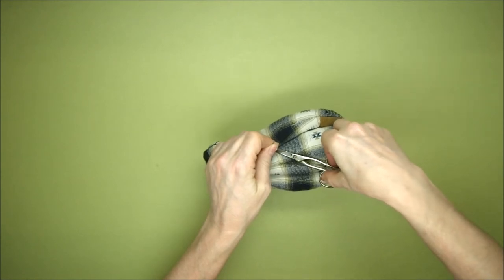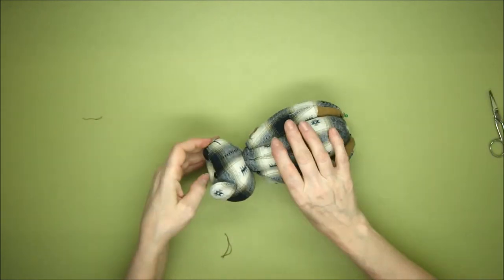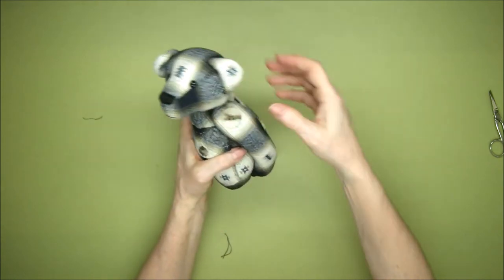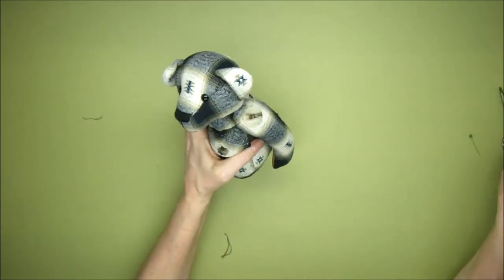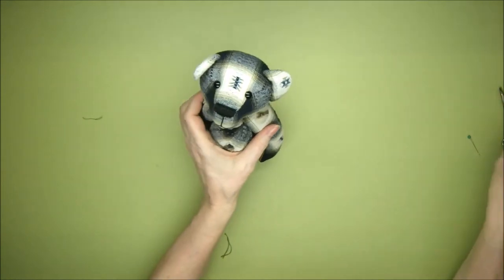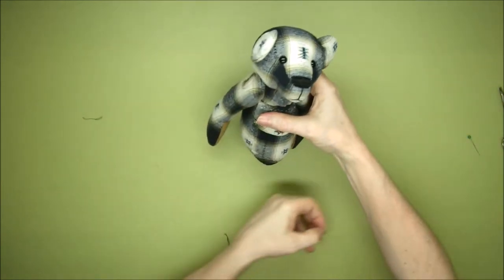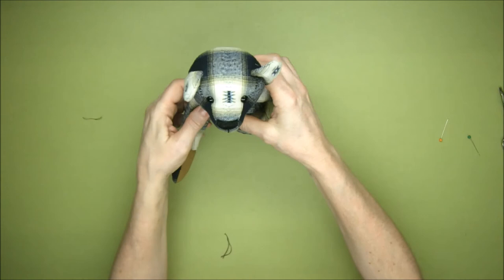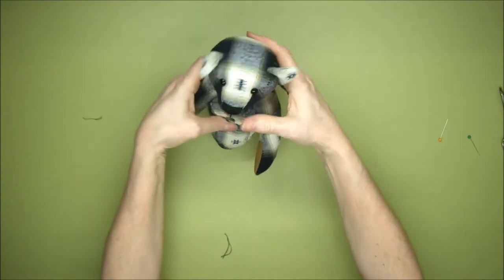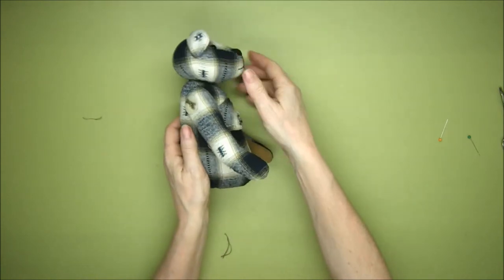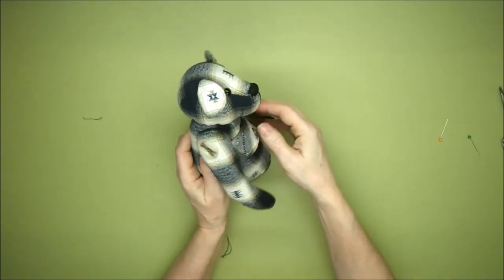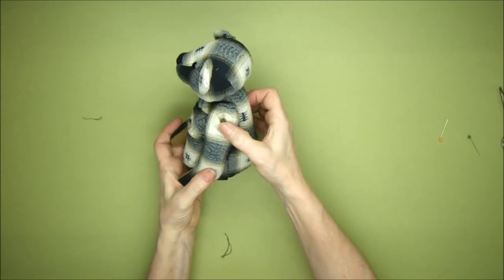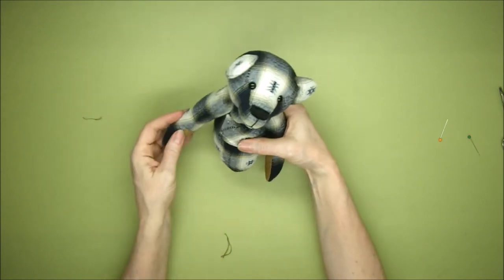Then pull it through the body and snip it off. There we go. That's the arms jointed. We can remove the pins at top and bottom. And there he is, moveable button jointed arms. Lovely. Those buttons work really well on him.